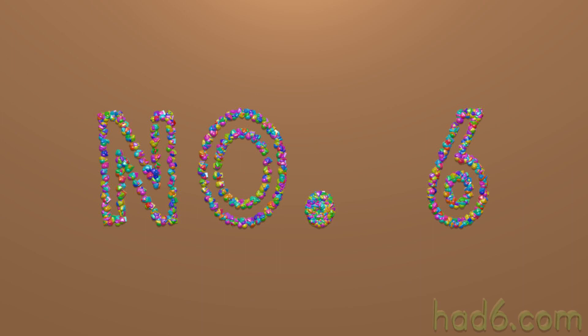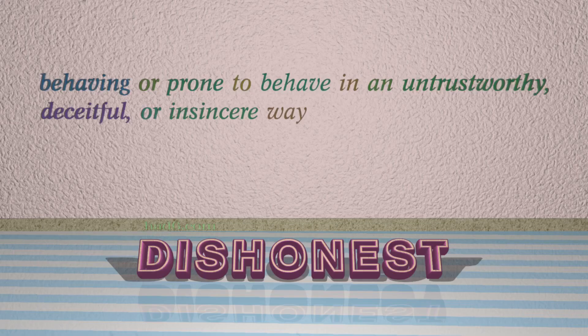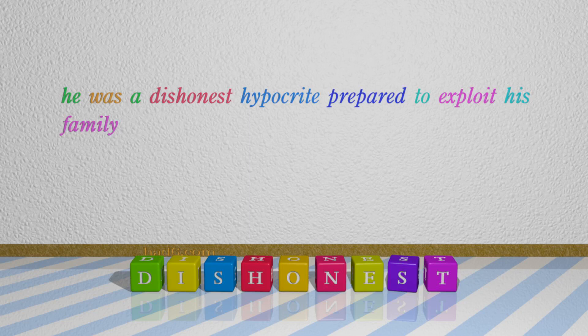Number 6: Dishonest. Which means behaving or prone to behave in an untrustworthy, deceitful, or insincere way. For example: He was a dishonest hypocrite prepared to exploit his family.